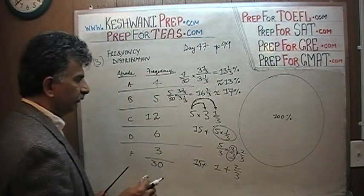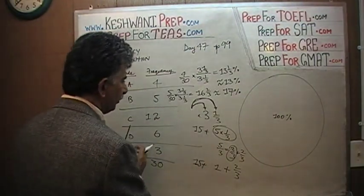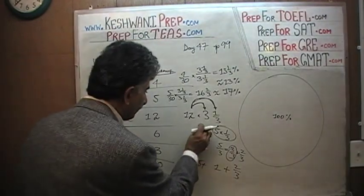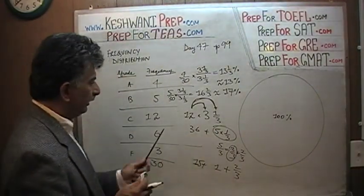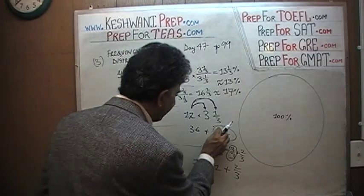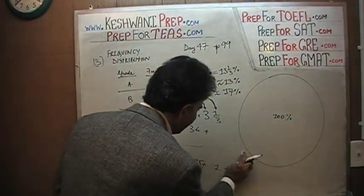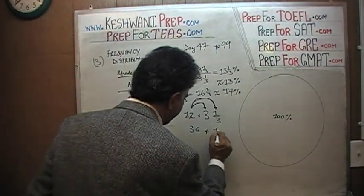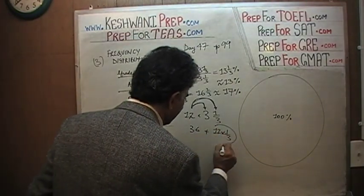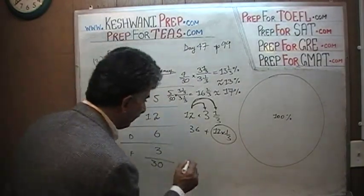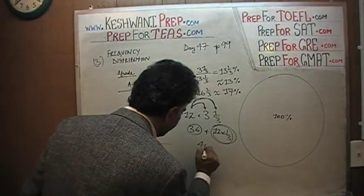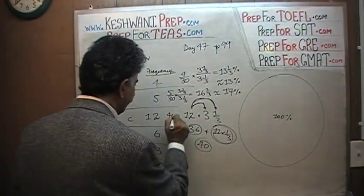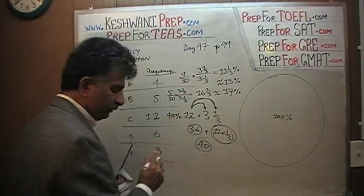Then we have 12 C's — same idea. 12 times 3 and one-third: 12 times 3 is 36, and one-third of 12 is 4. So 36 plus 4 is 40. C is 40 percent. C represents 40 percent. That's what they were asking in the book.